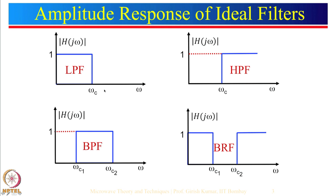This is an ideal characteristic — it does not really happen in reality. The ideal situation would be absolutely no attenuation in the passband (if input is 1, output is 1), with a sharp cutoff at omega_c and nothing passed after that. As mentioned, this is only an ideal response — practically, achieving this would require a filter of infinite order.